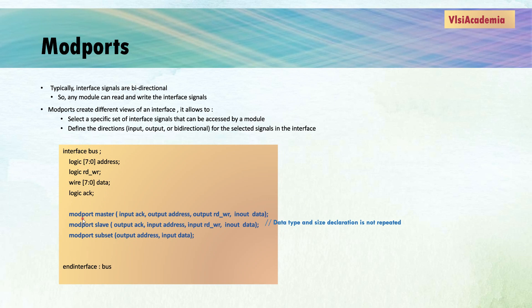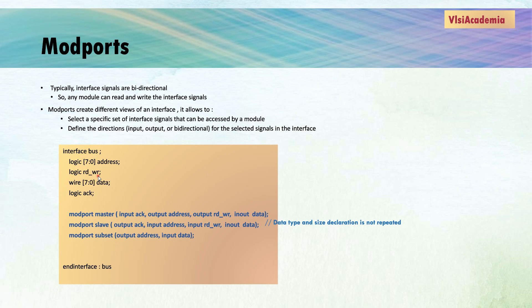Another use case of modport is that when an interface has a lot of signals defined, and we want a module to access only a few of those interface signals — to hide some data from that module — we can also use modport for that. Here I have defined a modport subset. When a module accesses the interface bus using modport subset, it will only be able to access interface signals address and data. It will restrict access to other interface signals like acknowledge and read_write. When defining directions for the selected signals in an interface, we do not need to declare the data type and size again. So using the modport keyword, we can create a subset of interface signals and specify directions for them as well.